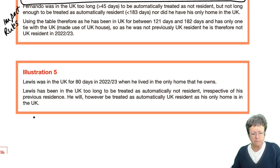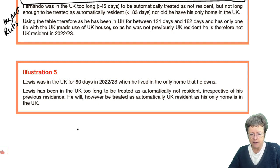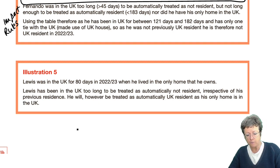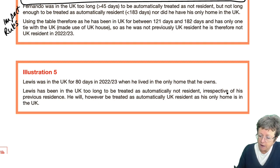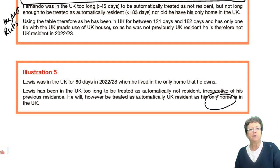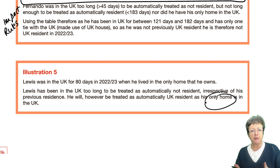Illustration five: Louis was in the UK for 80 days, living in the only home that he owns. He's been in the UK too long to be treated as automatically not resident. Irrespective of his previous residence, he will be treated as automatically resident because his only home is in the UK. Read the information, check the rates and the table, apply it to your question and give your answer.